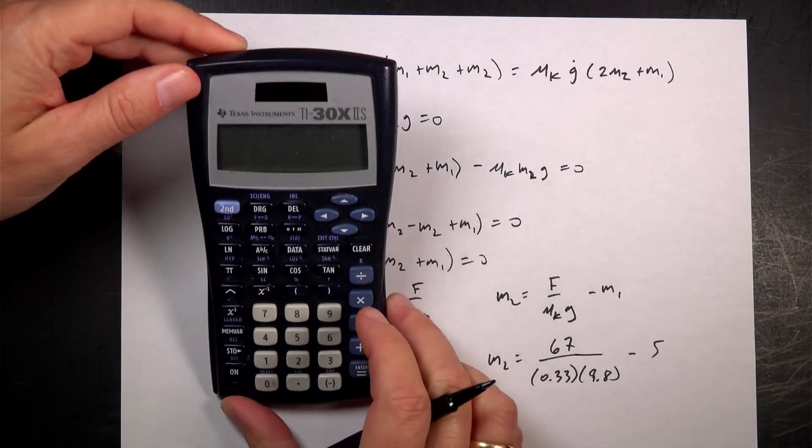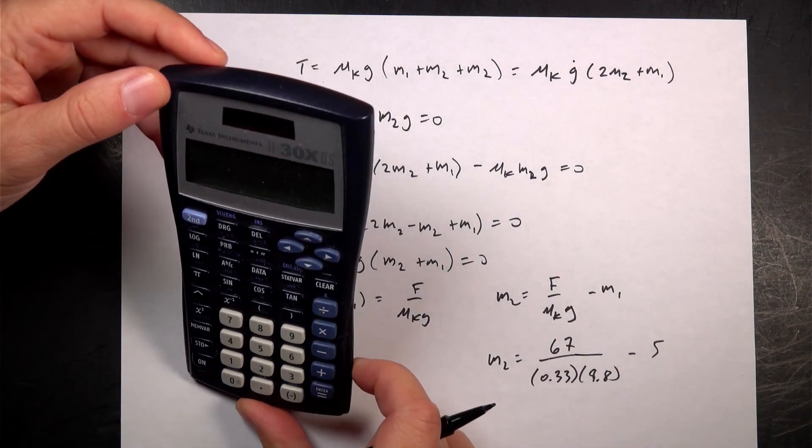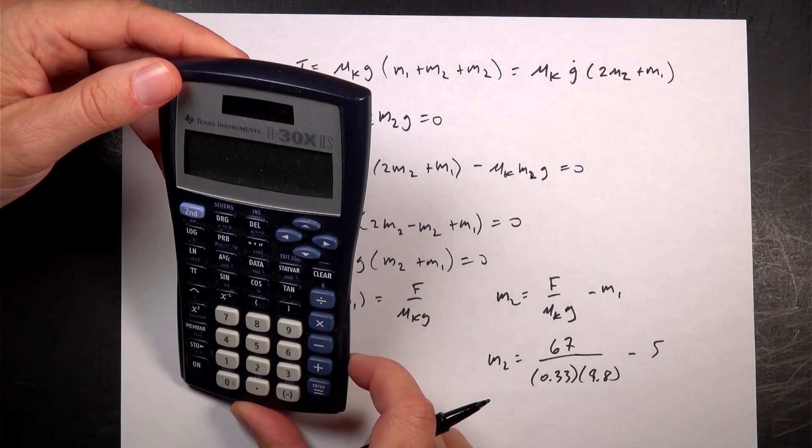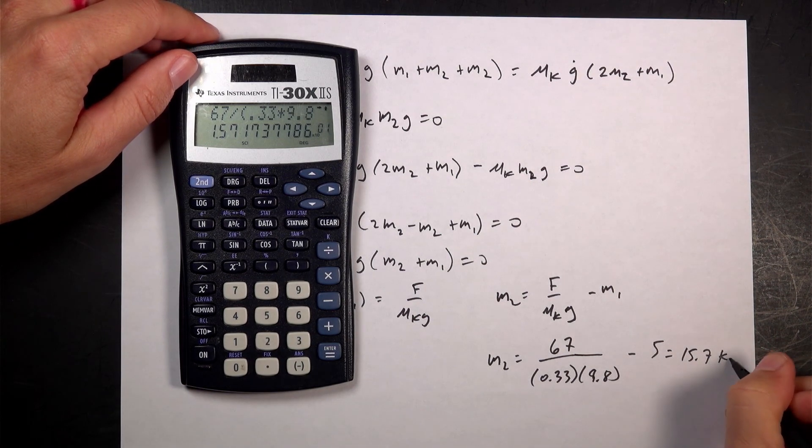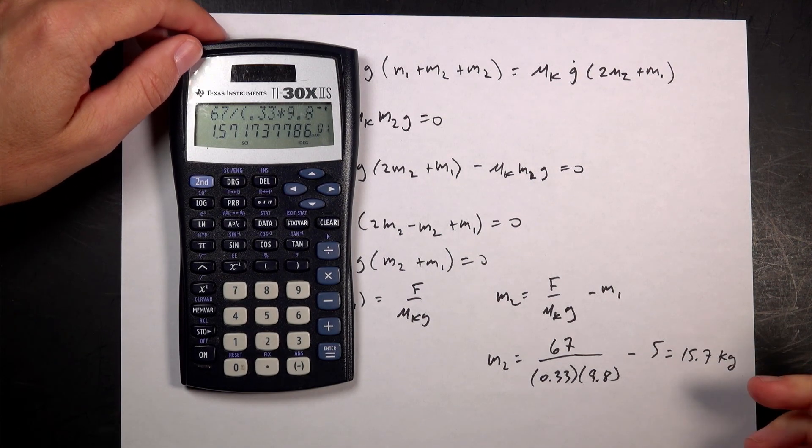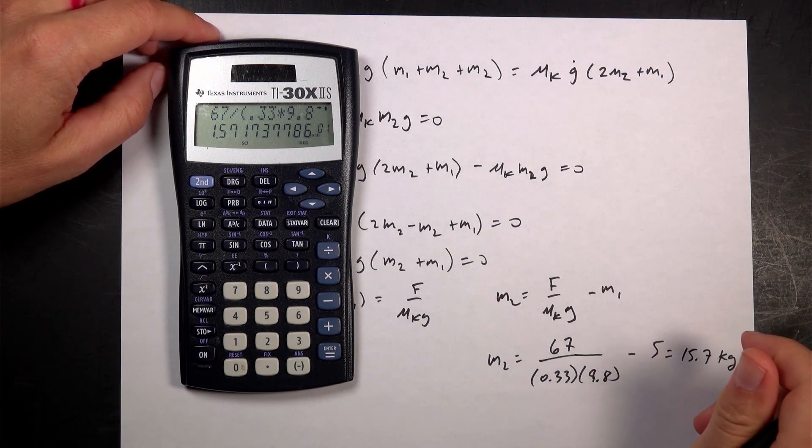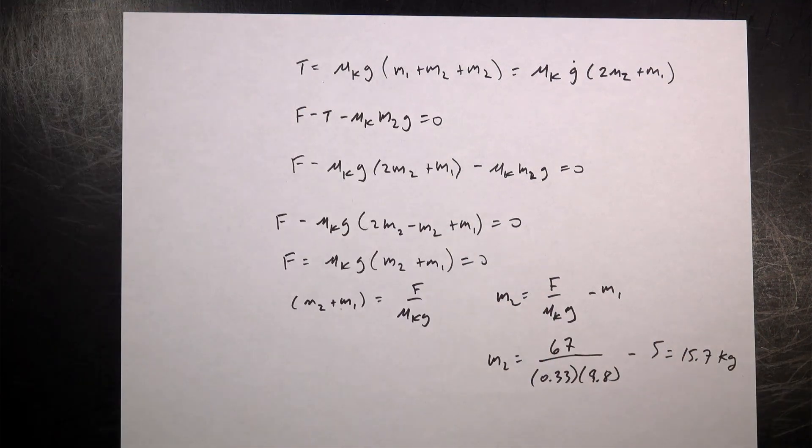67 divided by (0.33 times 9.8) minus 5. And I get 15.7 kilograms. I think that's right. There you go. Online problem.